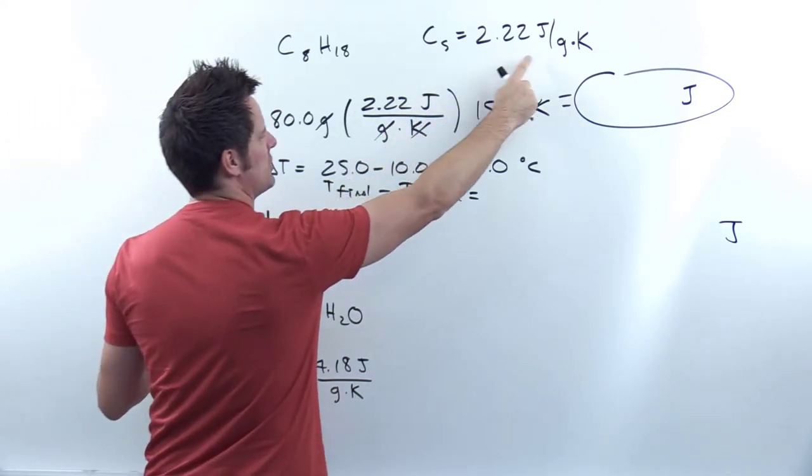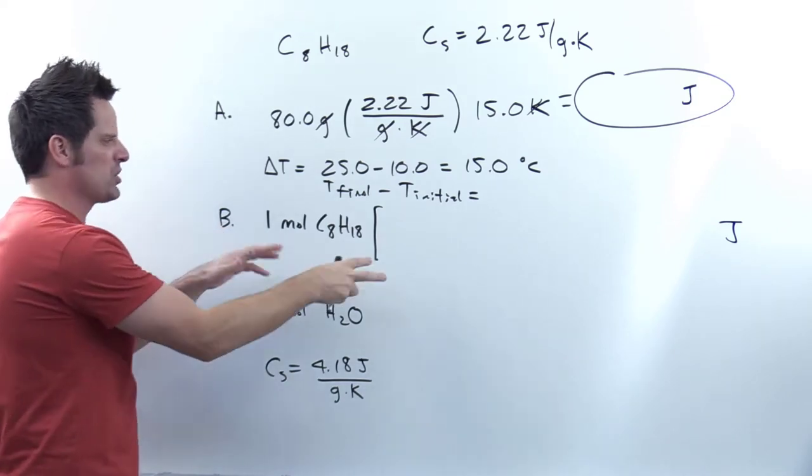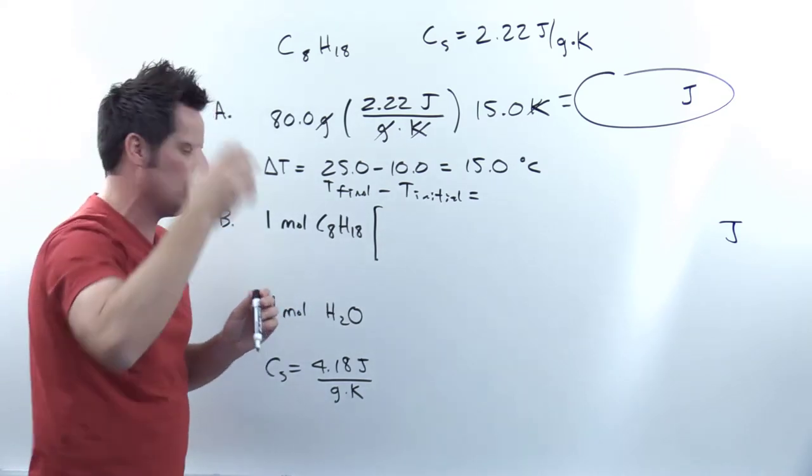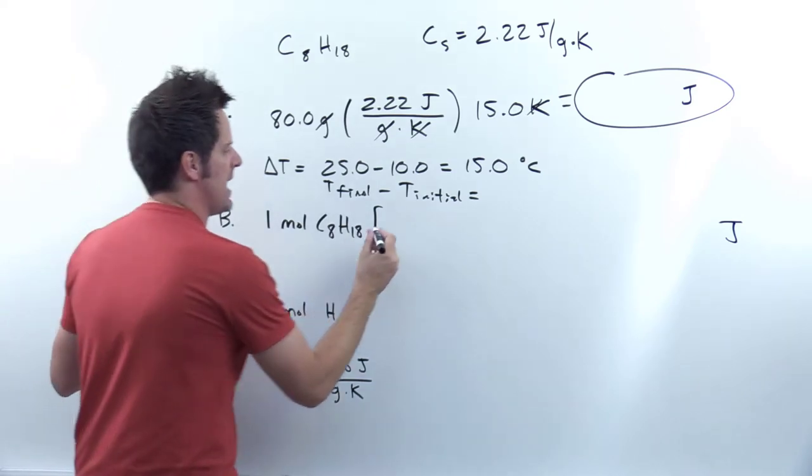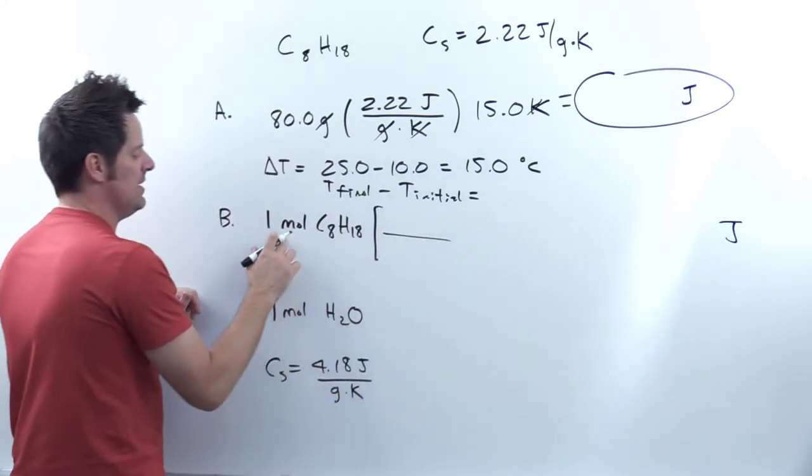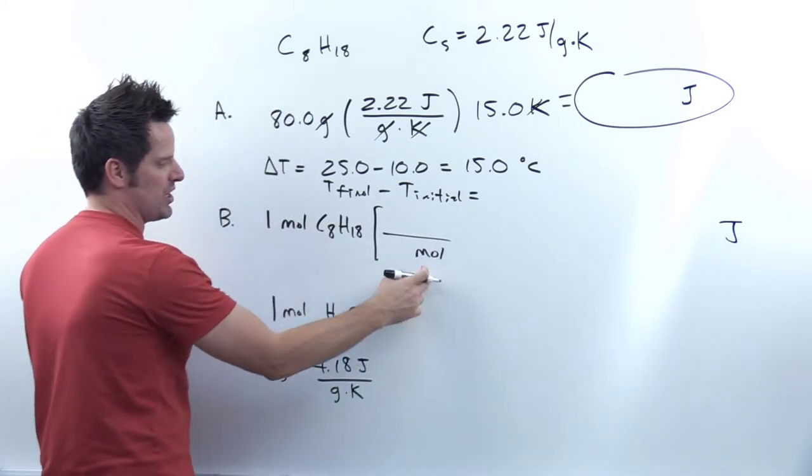Now I've been given a value for octane that has units of joules per gram Kelvin. I can't really take moles directly to that. Is there some way I could get to something that has grams in it related to moles? Well, yeah, in my typical fashion, I always want to put my units in my denominator being equal to units in the numerator. So I'm going to have moles here, moles here.